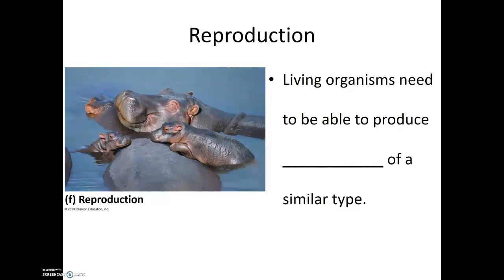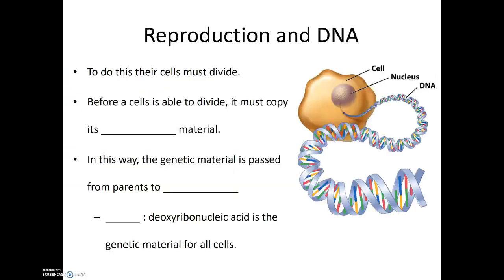The next characteristic of life is something that must be true for a population, although not necessarily for an individual, and that is reproduction. Living organisms need to be able to produce offspring of a similar type to themselves. Not every individual in a population needs to do this, but each population needs to be able to produce offspring. The characteristics of the offspring are based on the genetic material supplied by the parents, so before a cell divides it must copy its genetic material — in this way, genetic material is passed from parents to offspring.